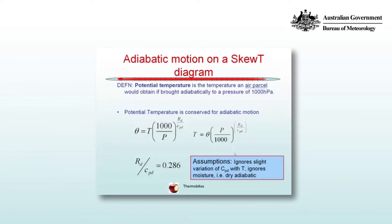We formally define potential temperature as the temperature an air parcel would obtain if brought adiabatically to 1000 hectopascals. Potential temperature is conserved for dry adiabatic motion and can be inverted to get temperature at any pressure level. Rd/Cpd equals 0.286, ignoring slight variations of Cpd with temperature and moisture. This is purely dry adiabatic motion; we'll extend that later.